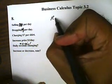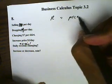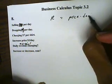Now revenue is made out of two functions: the price function multiplied times the demand.